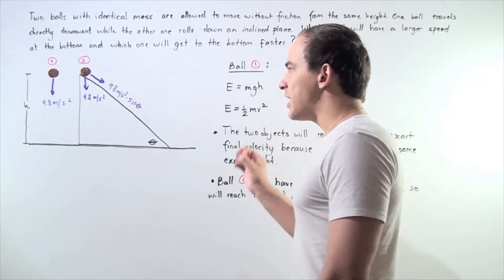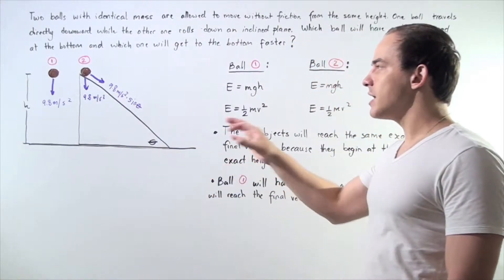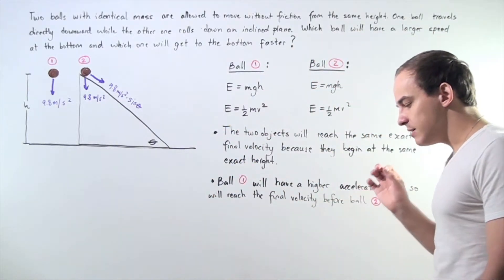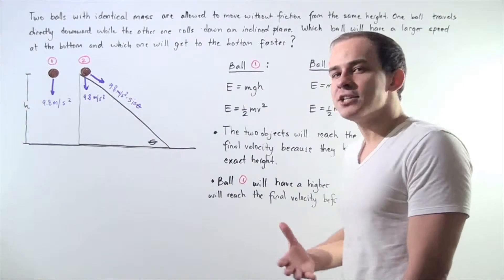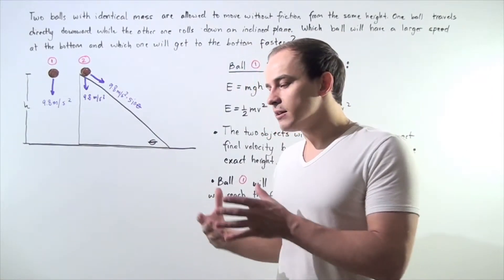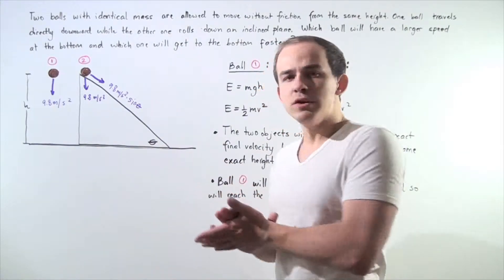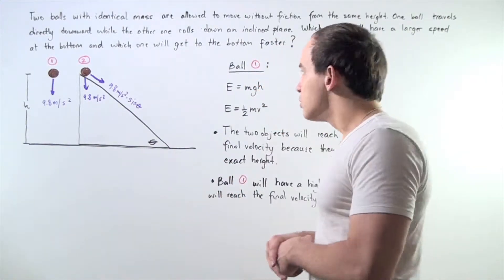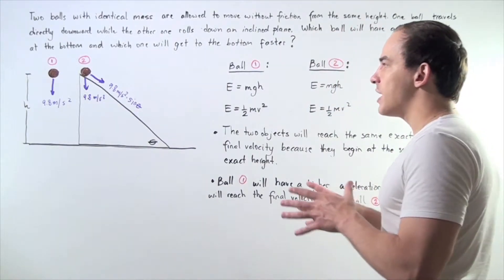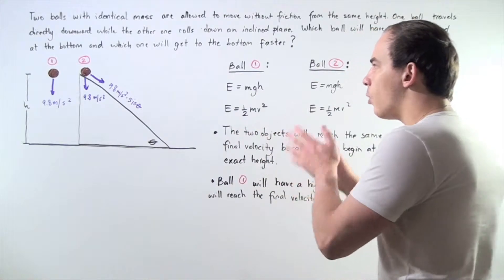Because we're dealing with a conservative system, because only conservative forces are acting on our object, that basically means that we have conservation of mechanical energy. The mechanical energy throughout our system, throughout motion, remains constant. So, let's find what the energy is, mechanical energy, for ball number one and ball number two.